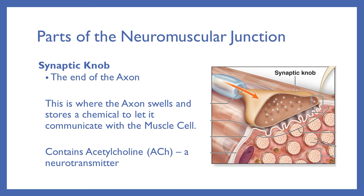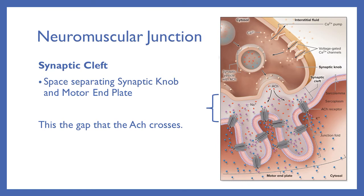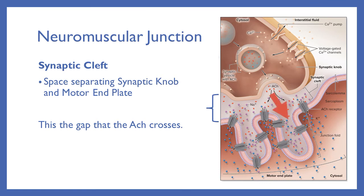The synaptic knob contains acetylcholine, ACh, which is a neurotransmitter — it allows two different cell types to communicate. Where the synaptic knob meets the sarcolemma is a specialized area called the motor end plate. This specialized area is covered in receptors for acetylcholine. When the synaptic knob releases the acetylcholine, it binds to the motor end plate's receptors. The motor end plate is a little more wrinkled just to increase the surface area. The space between the synaptic knob and the motor end plate is called the synaptic cleft — it's a gap that the acetylcholine is going to cross to reach the muscle cell.